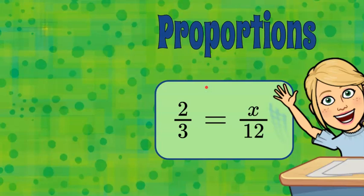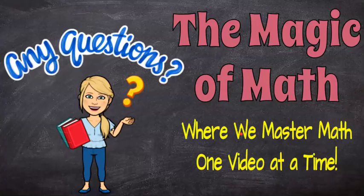So that is a proportion — how we can make a proportion out of equivalent ratios and determine a proportional relationship — and two methods to solve a proportion: cross-product property and solving using multiplication. I thank you for joining me today at the Magic of Math, where we continue to master math one video at a time. I hope you'll come back soon, and have a great day.